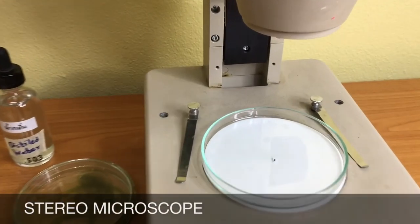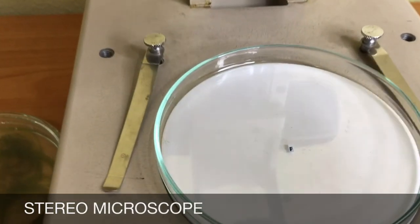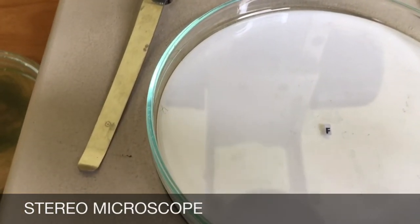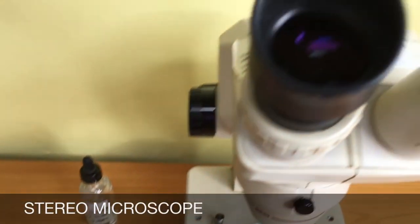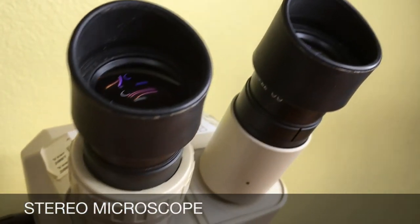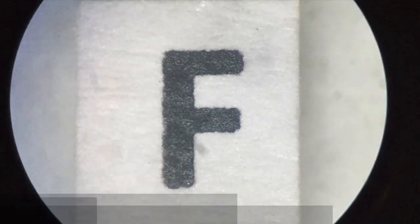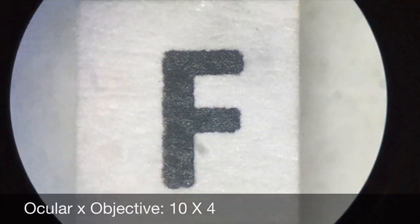Next, let's see the letter F under the stereo microscope. Please note that we use tenfold magnification of the ocular lens and the fourfold magnification of the objective lens.